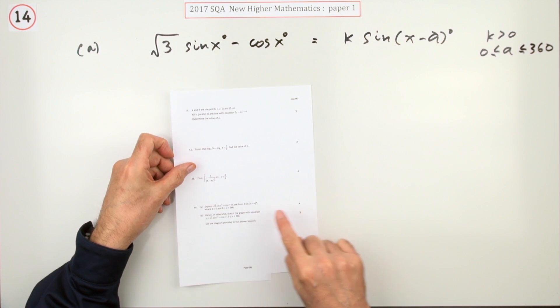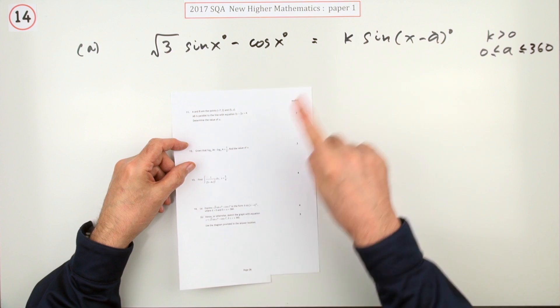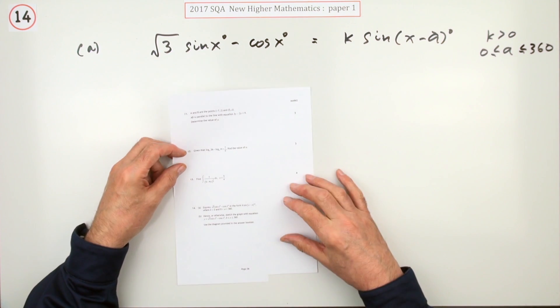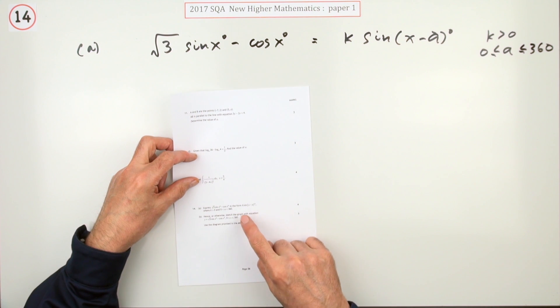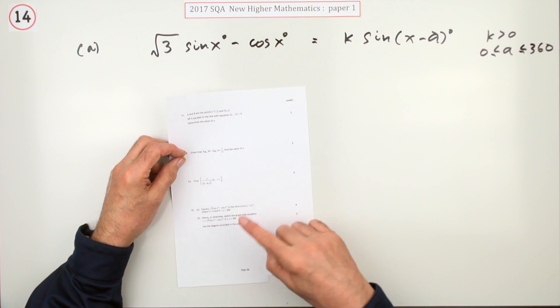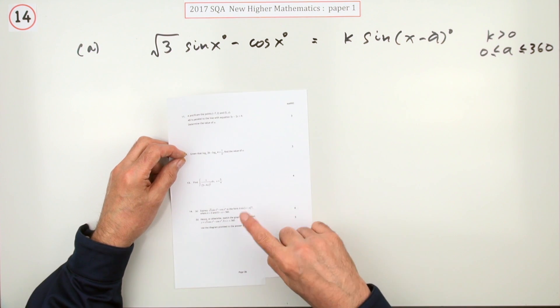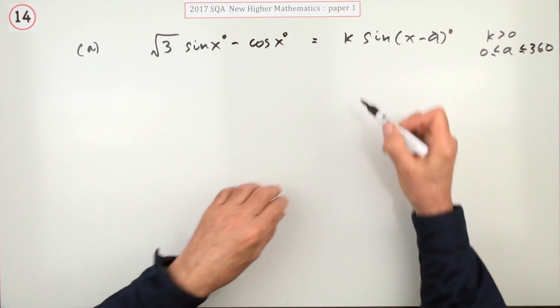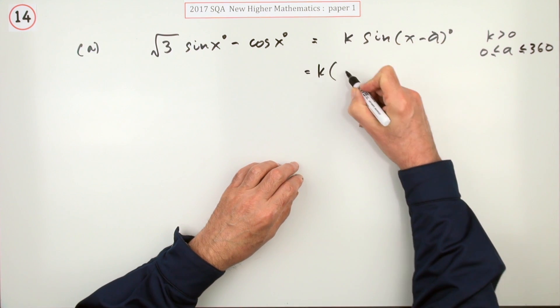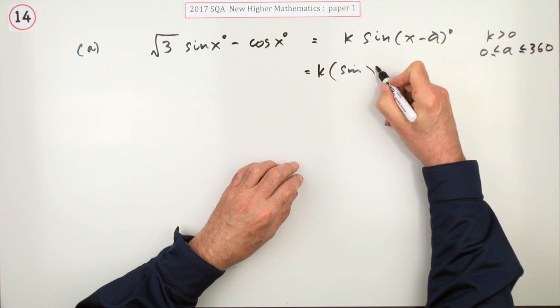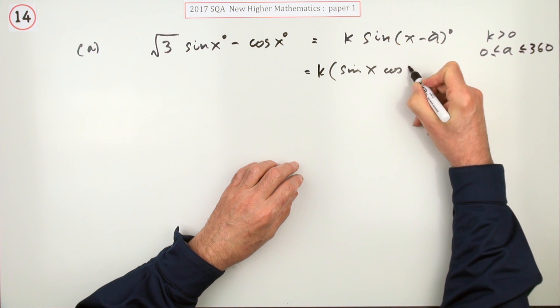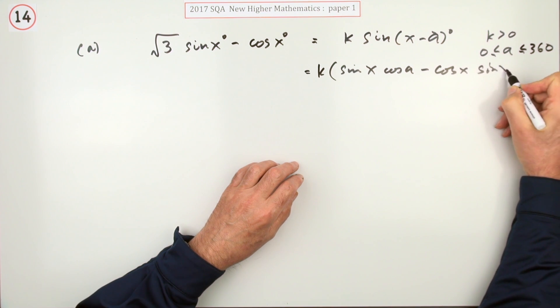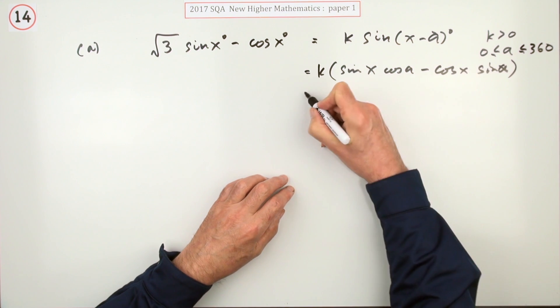Number 14, seven marks. Here you can see straight away, there's the wave equation. At least it's in paper one so you won't need your calculator for this. Part b, sketch the graph, that's one of the worst ones, but at least it's in degrees. First part, express it in this form here sine. So what is that expanded?